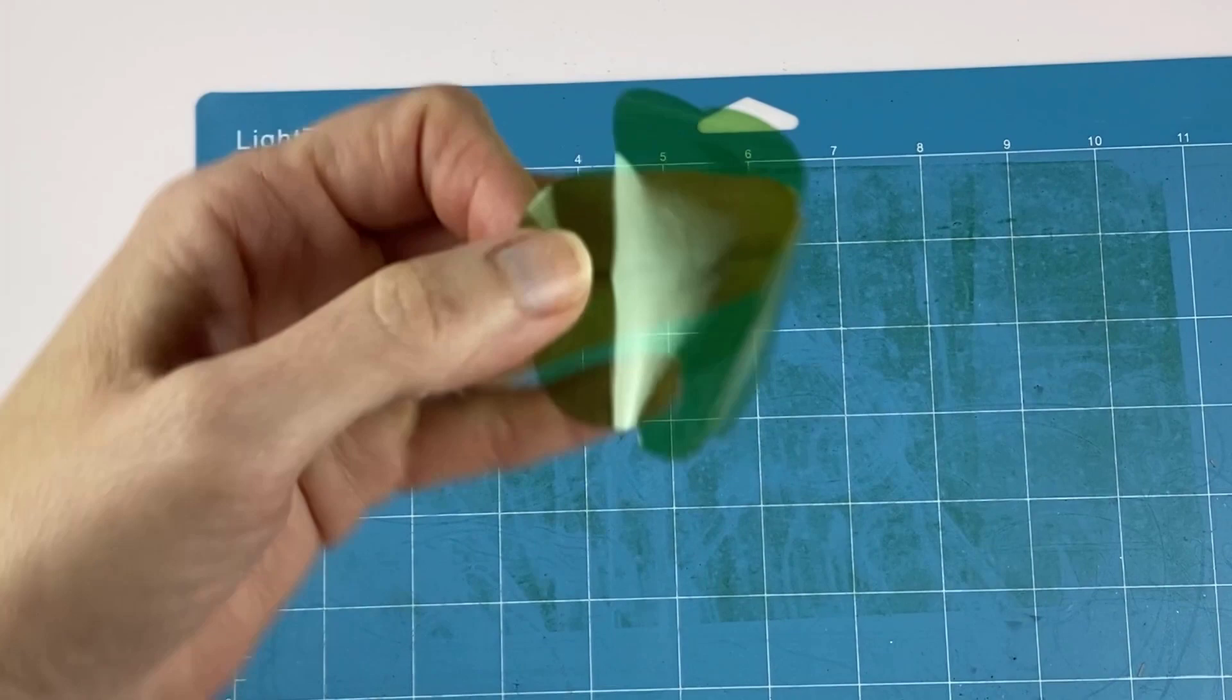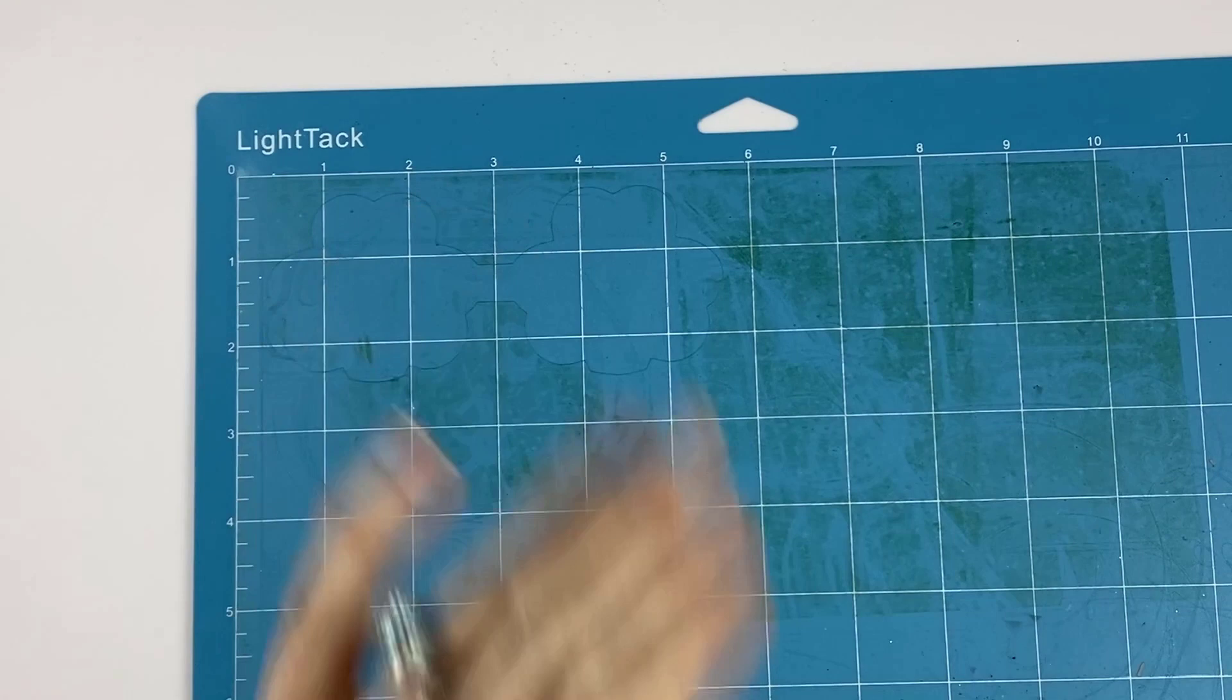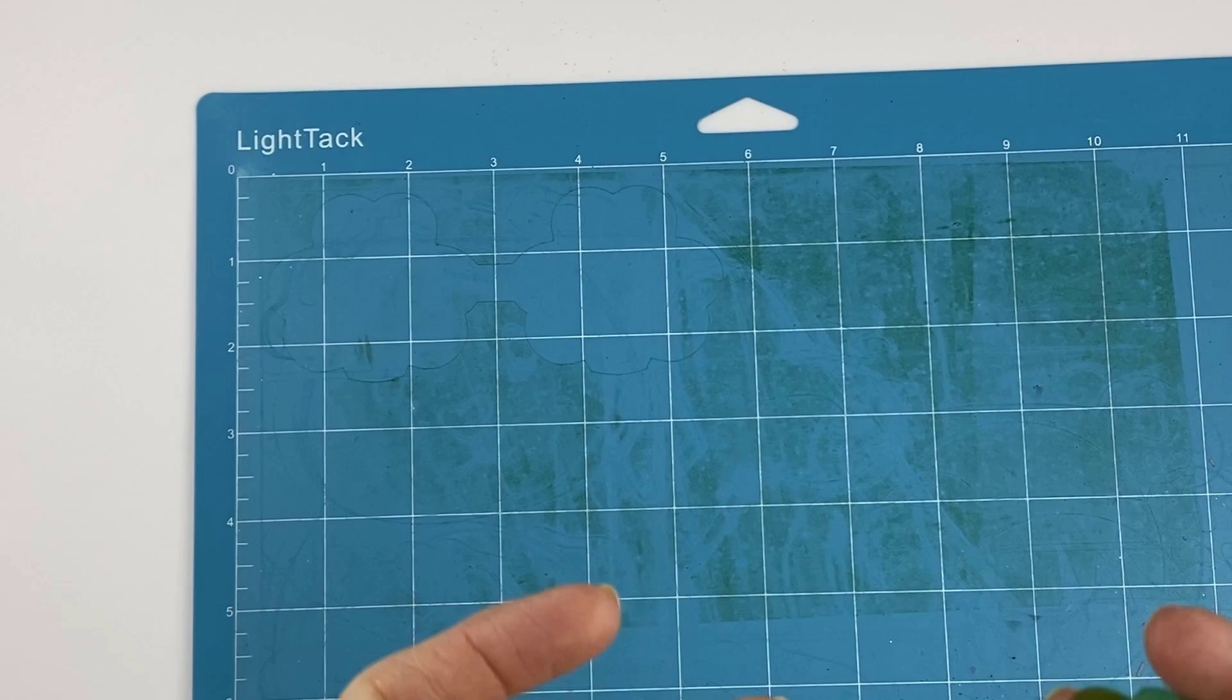And again, if yours did not come out like this, if yours tore or anything, make sure your mat is clean, make sure it's stuck down well, and then adjust your pressure settings a little bit. Go more or less depending on what results you're getting and you should be able to cut your cellophane.